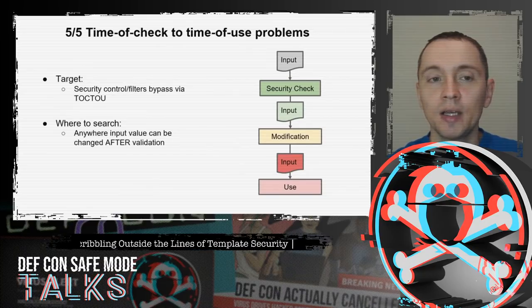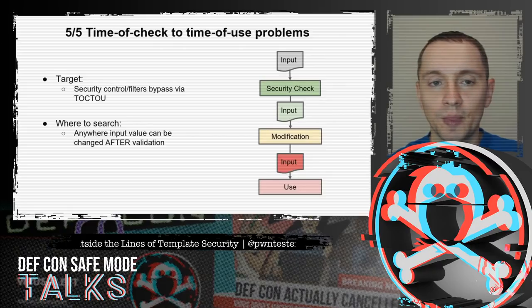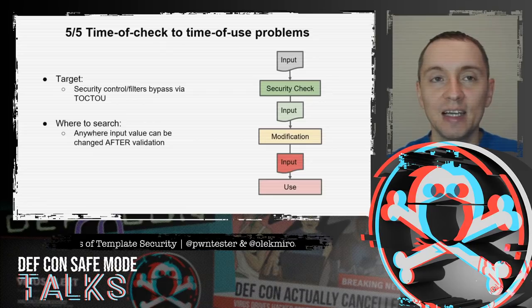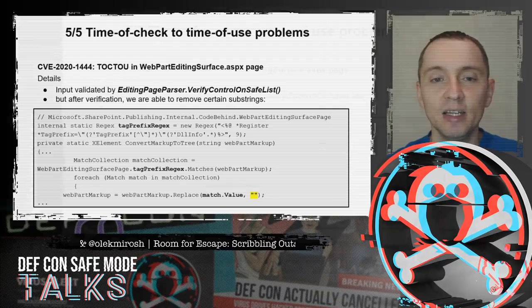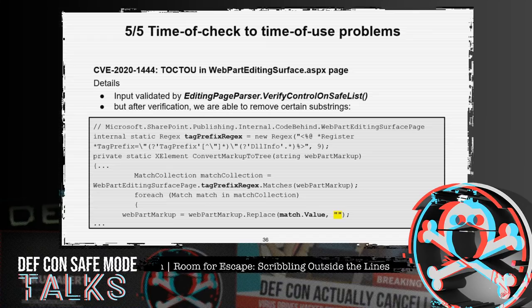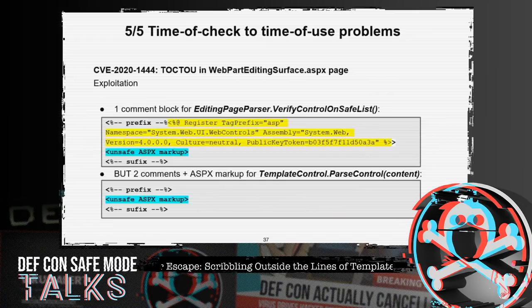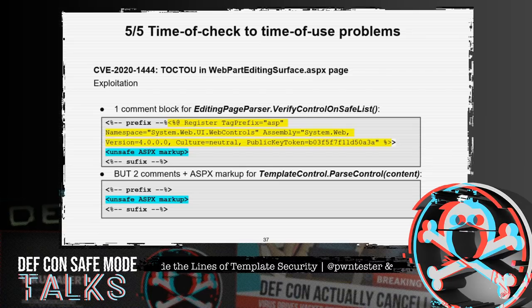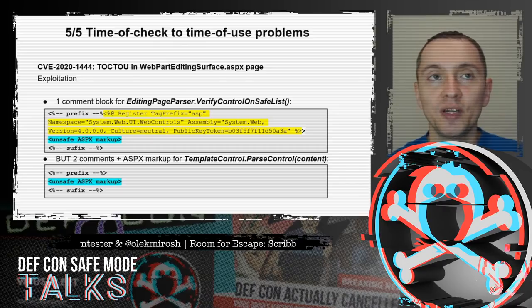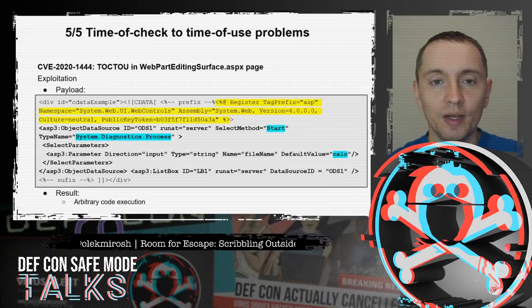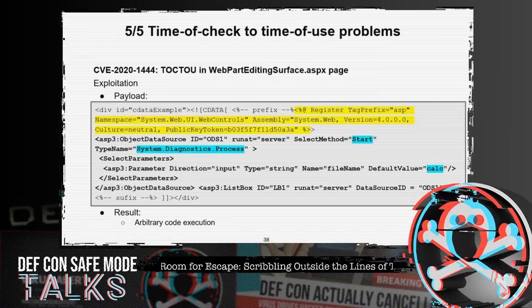The last type is the classical time-of-check to time-of-use (TOCTOU) problem — when input is validated but then changed before the server uses it. We found this in the Web Part Editing Surface page where user input is validated by VerifyControlOnSaveList, but the server later modifies the input by removing substrings matching a specific regex pattern. Our crafted input looks like a single server-side comment block to the validator, but after SharePoint removes a highlighted substring, ParseControl sees two comments and unsafe markup. Since ParseControl has only one argument, the page filter is ignored, allowing our ObjectDataSource payload with a calculator command.